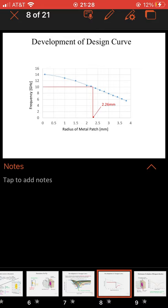And in the further development of our design curve, we have the radius of metal patch and then we have gigahertz. To achieve 10 gigahertz that we designed the absorber to operate at, as it shows in the graph, we need 2.26 millimeters in our metal patch to achieve 10 gigahertz.